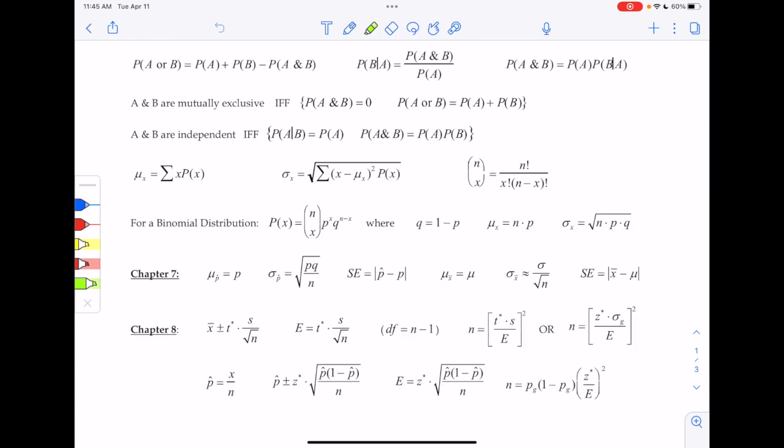All right, so on the formula sheet, if you look at chapter 8, and you look in the context of means, so this whole line right here is for means. The one down below right there is for proportion stuff. So we're going to look at the one for means. And we have two formulas to choose from for n, which is the sample size. We have these two right here. So which one are we going to choose?